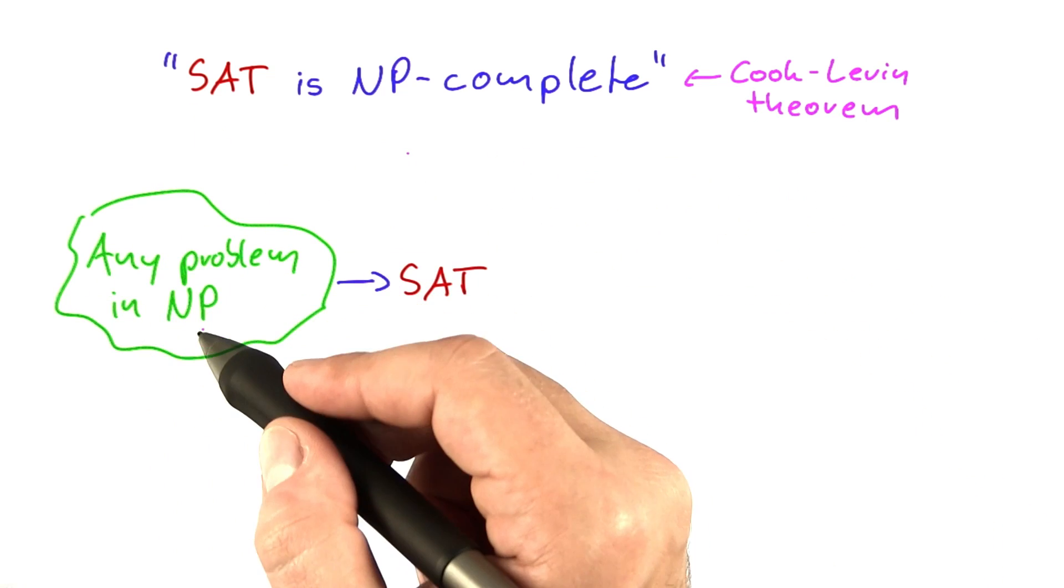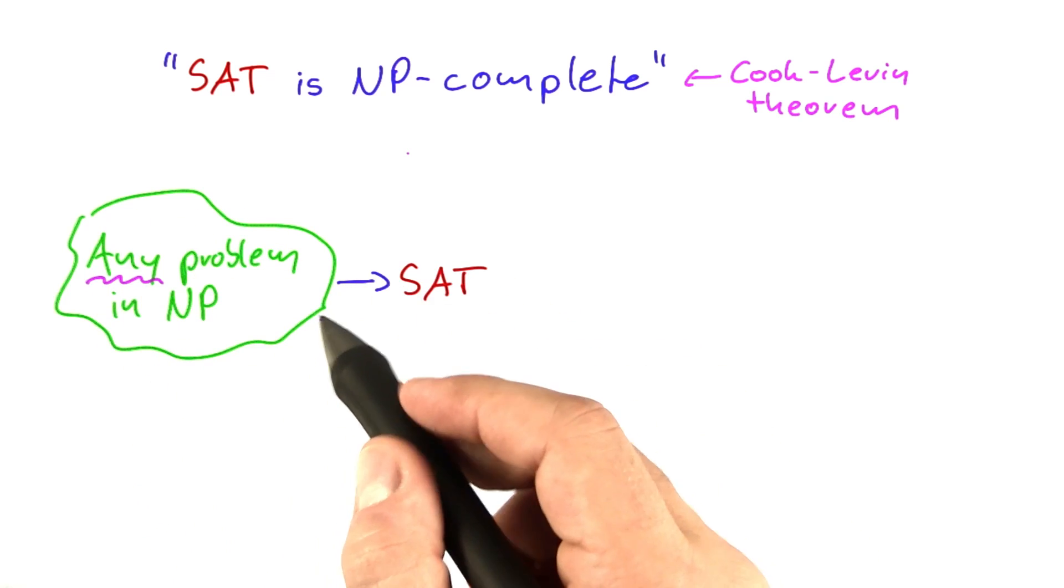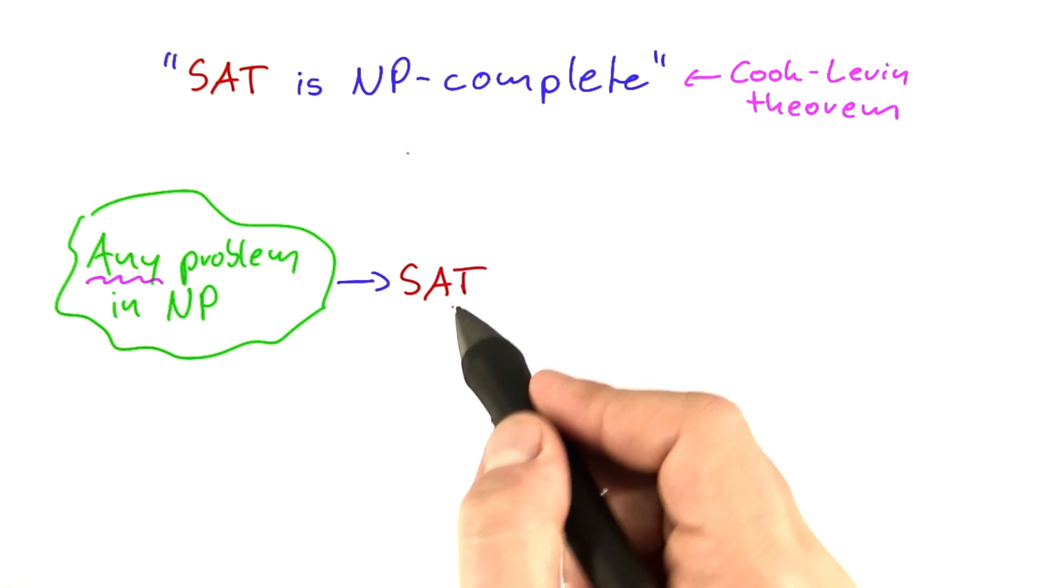To show that SAT is NP complete, what we basically have to show is that for any problem in NP, there is a polynomial time reduction to SAT.